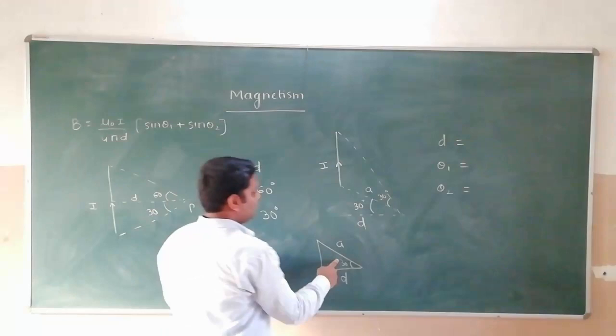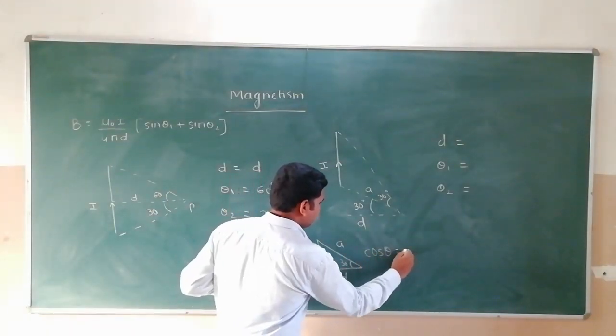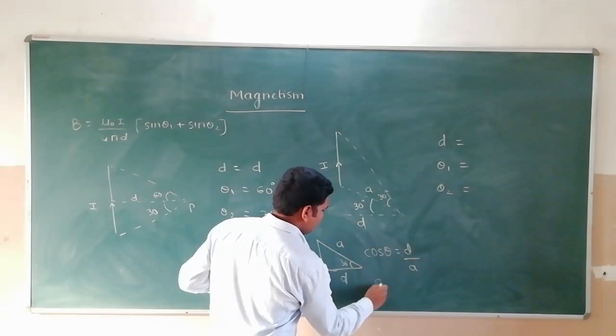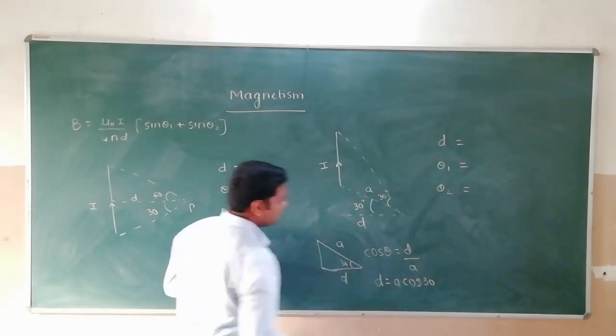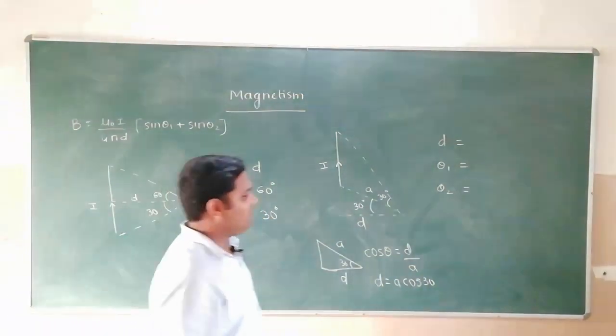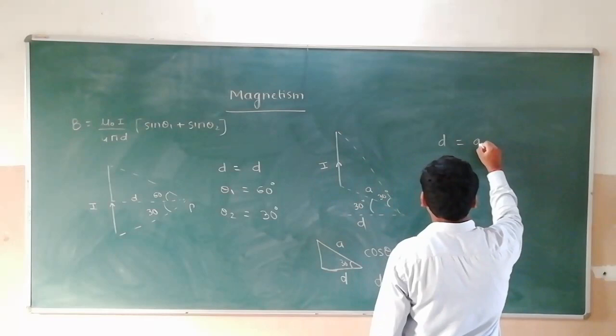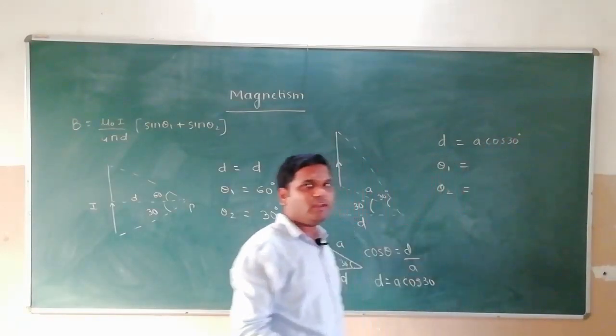This d should be the adjacent side. Theta adjacent and hypotenuse: cos theta equals adjacent side upon hypotenuse. So d's value will be a cos 30.